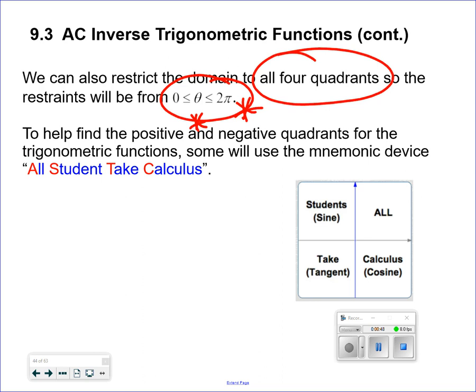There is a mnemonic device you can use to memorize what to do. All trig functions are positive in the first quadrant — sine, cosine, tangent, cosecant, secant, and cotangent. Sine and cosecant are positive in the second quadrant. Tangent and cotangent are positive in the third quadrant. Cosine and secant are positive in the fourth quadrant. The mnemonic is 'All Students Take Calculus' — All positive in first, Sine in second, Tangent in third, Cosine in fourth.